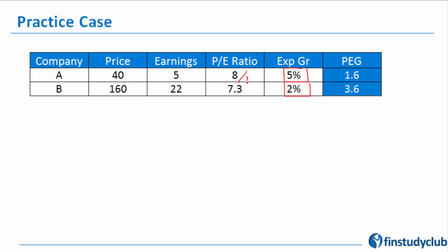Which means to say that 8 times is what I'm expected to pay for $1 of earning if the expected growth is 5%. If I have to equalize this parameter, I'm going to divide this level by this level. So 8 divided by 5 is 1.6.